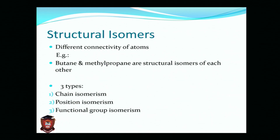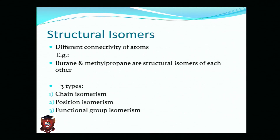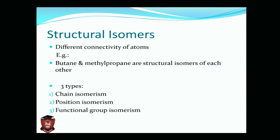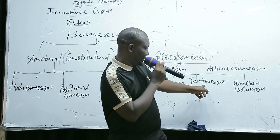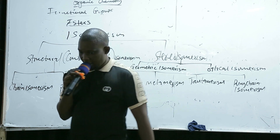The six main types of structural isomerism are: one — chain isomerism; two — position isomerism; three — functional group isomerism; four — metamerism; five — tautomerism; and six — ring-chain isomerism. These are all on the board.